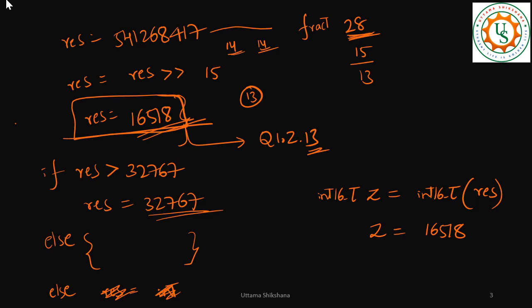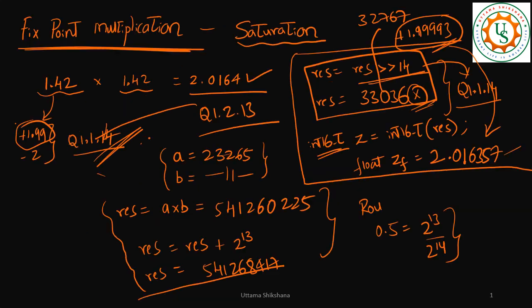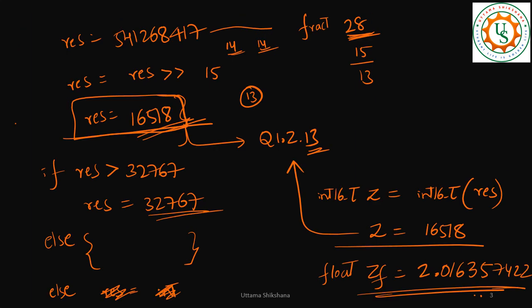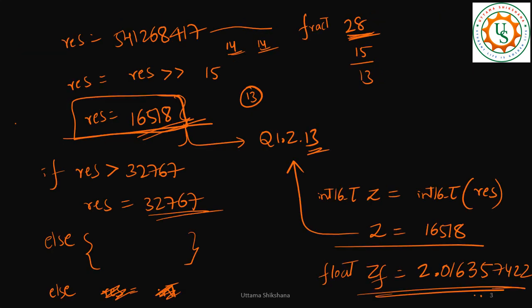To convert to float, we divide 16518 by 2 to the power of 13 because we are now in Q13 format. The answer is 2.016357... which is very close to our expected 2.0164. There is some small precision loss because during the float-to-fixed conversion the number didn't become exactly 23266, and that small loss carries through to the final result.